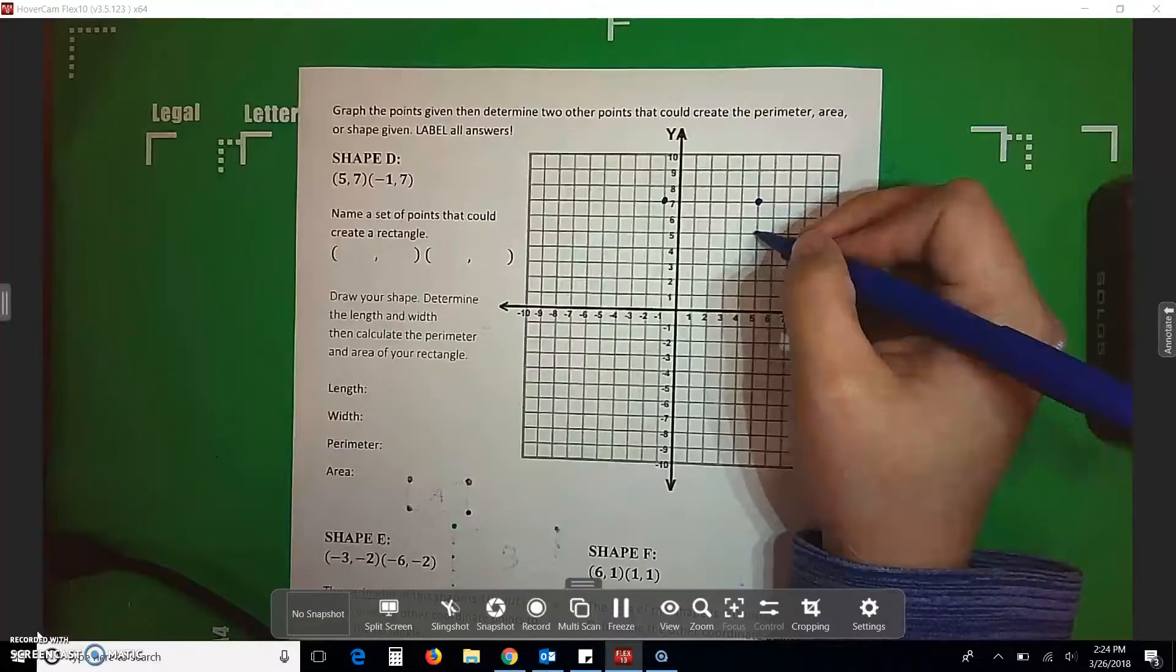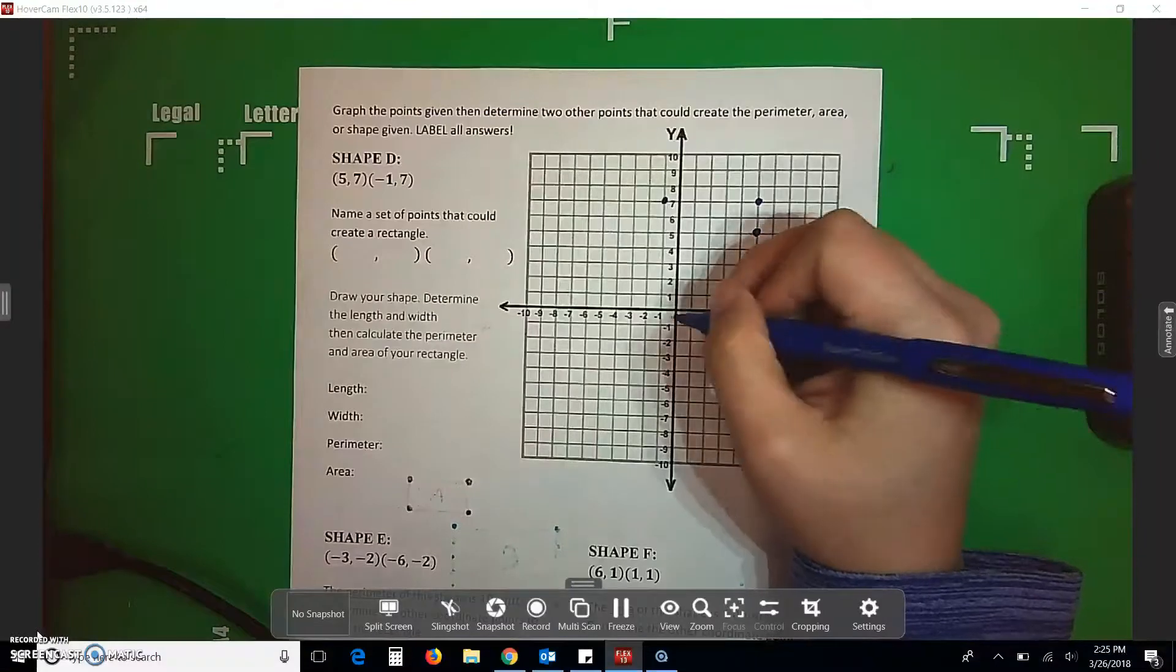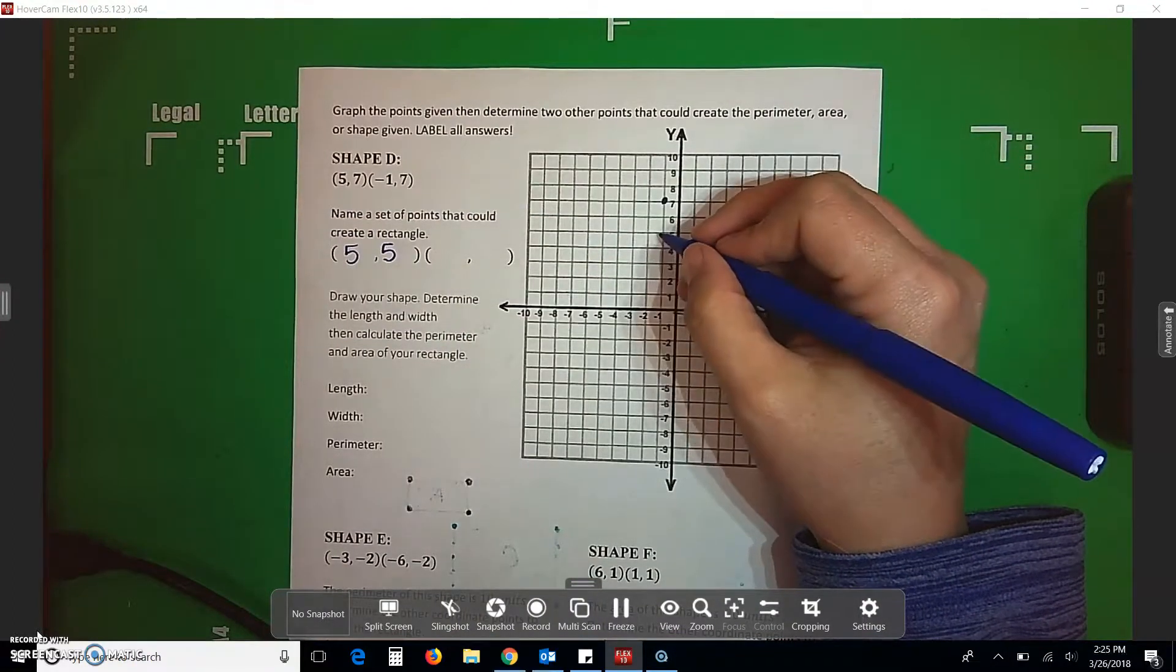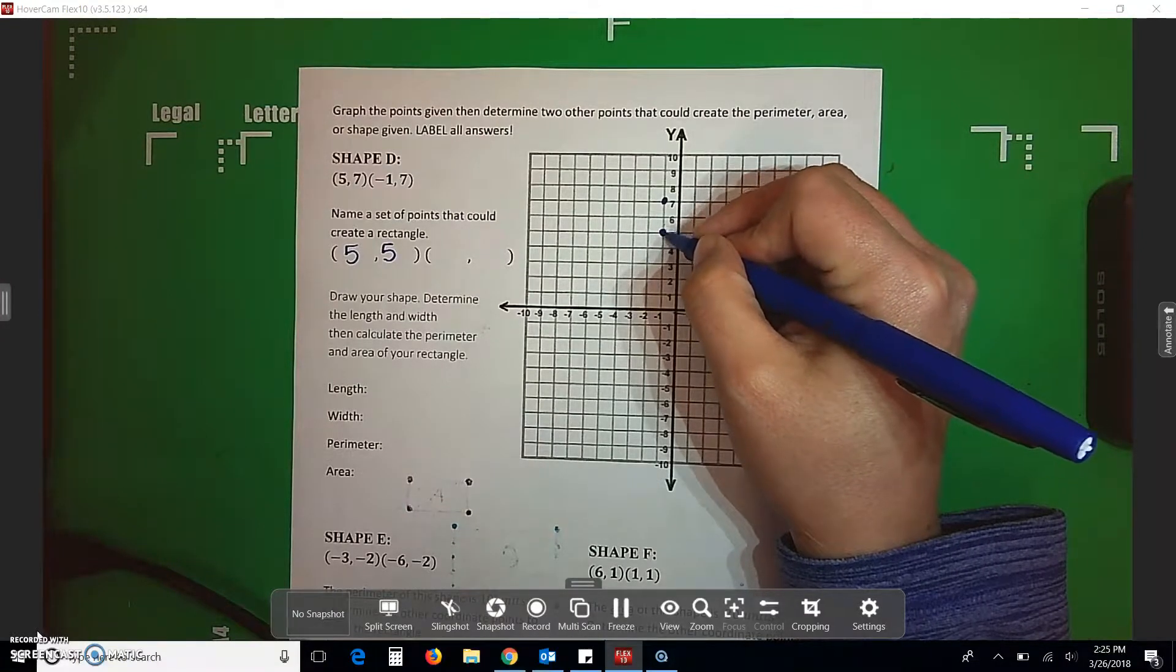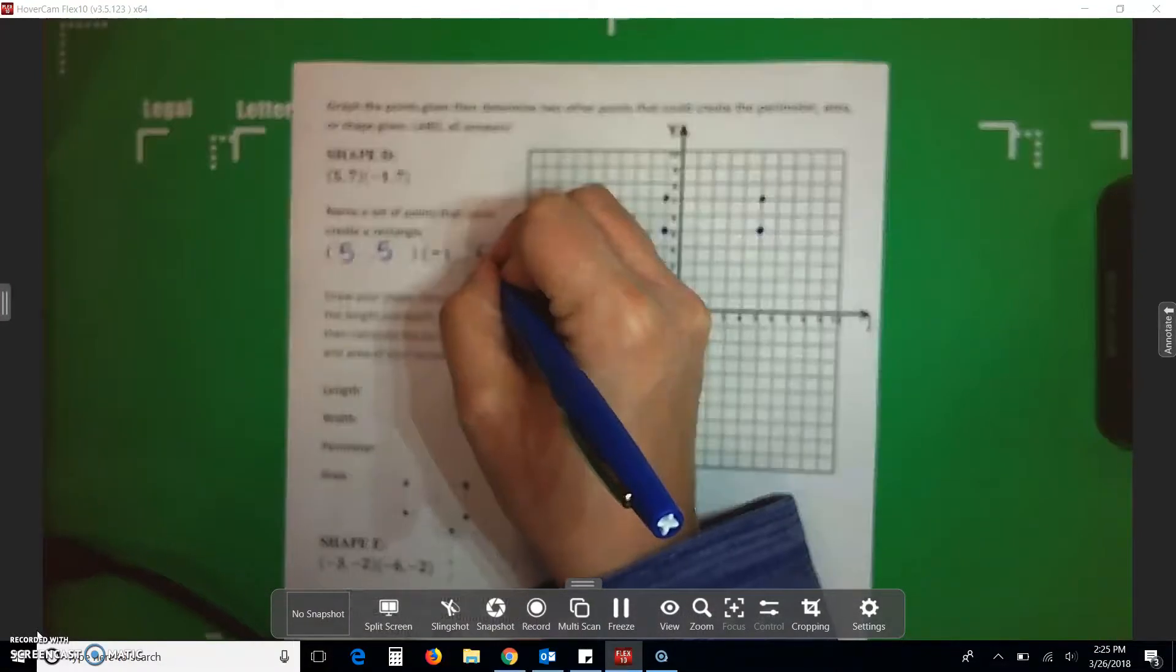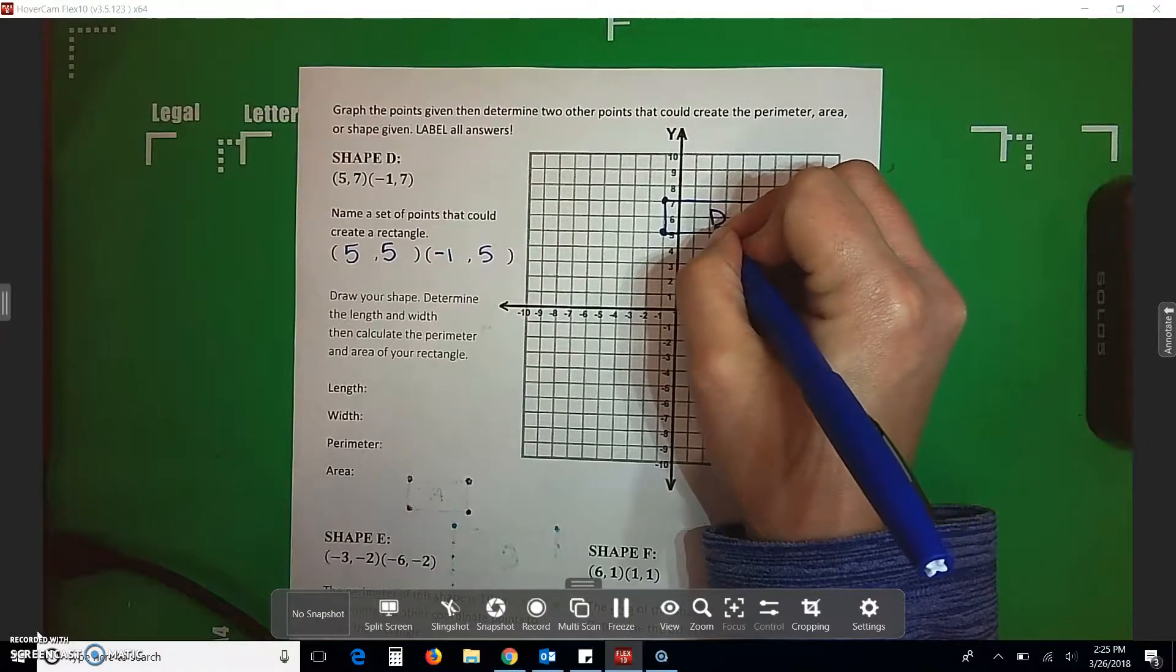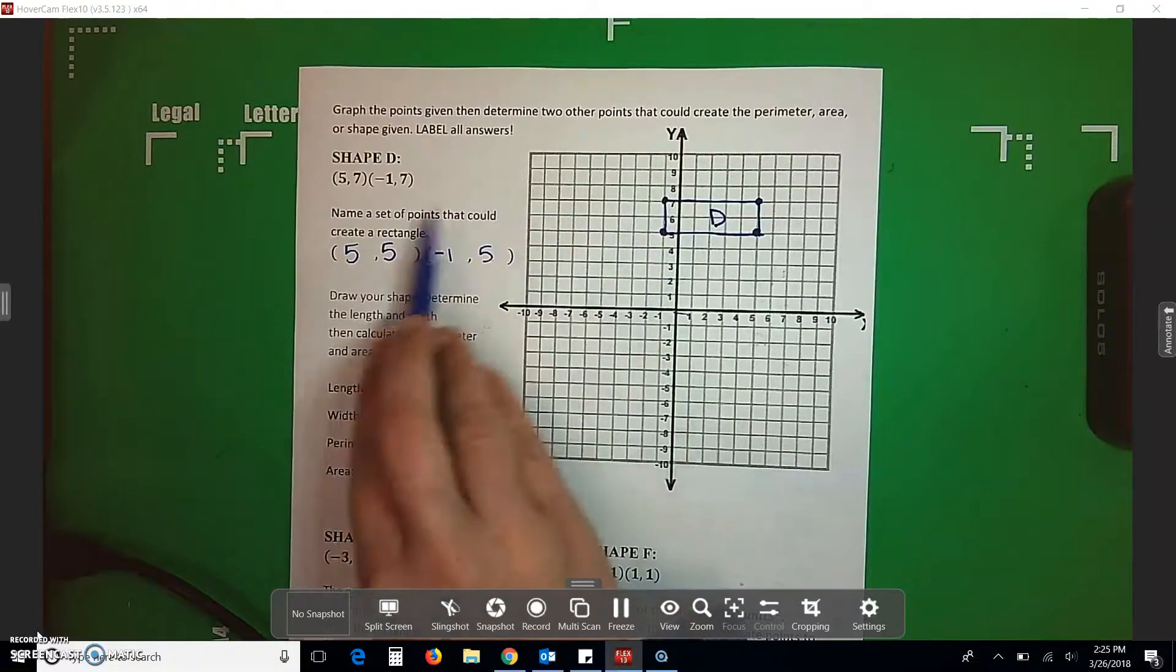Now, I have to figure out where I just put that point. So, I went over 5, up 5. So, that's going to be my first point over here. And then, I need to make sure I meet up just like I did on the other side. If I dropped 2 here, I know I can drop 2 here. And I list that point as negative 1, 5. Connect my dots. Label my shape D. And I determined that those 2 can make a rectangle and that's what I wanted.